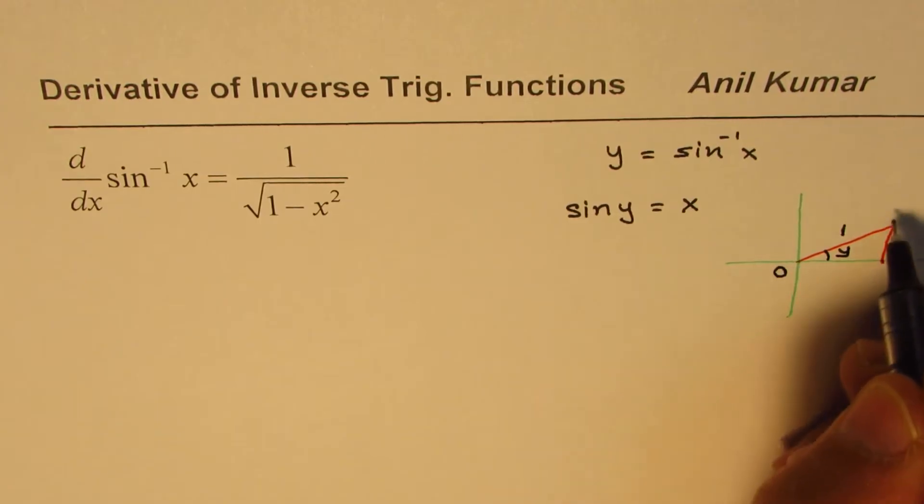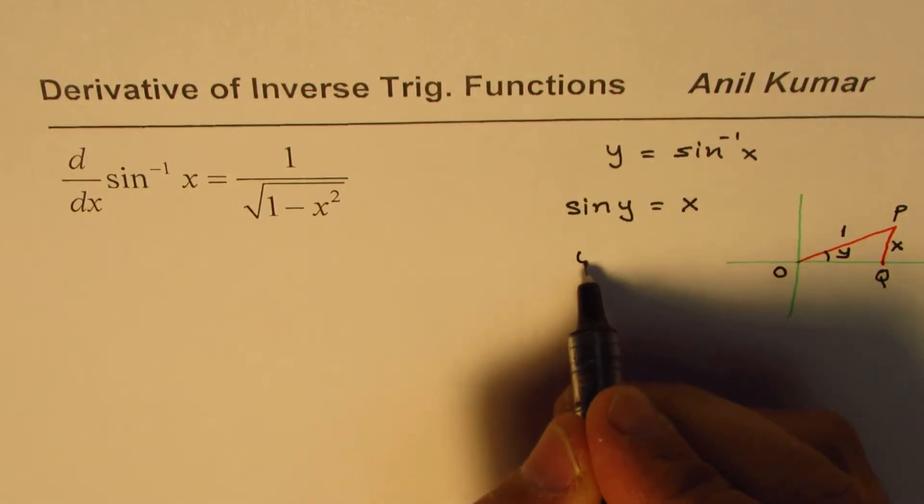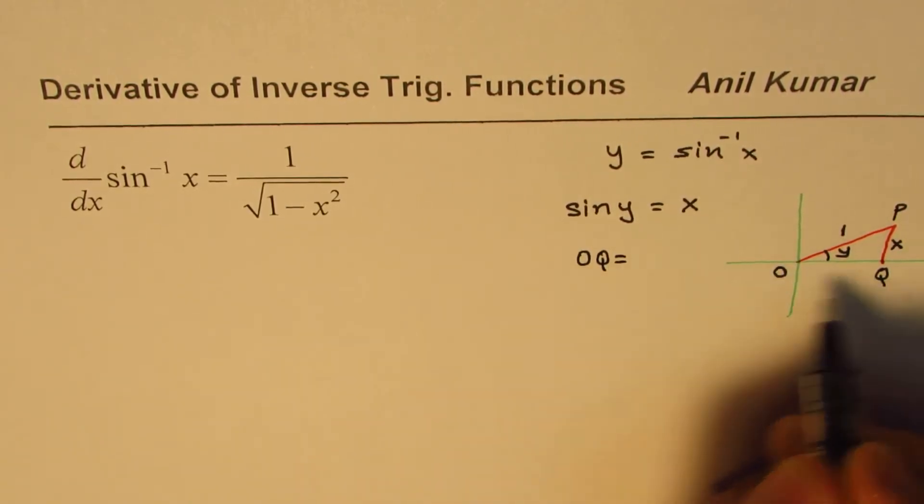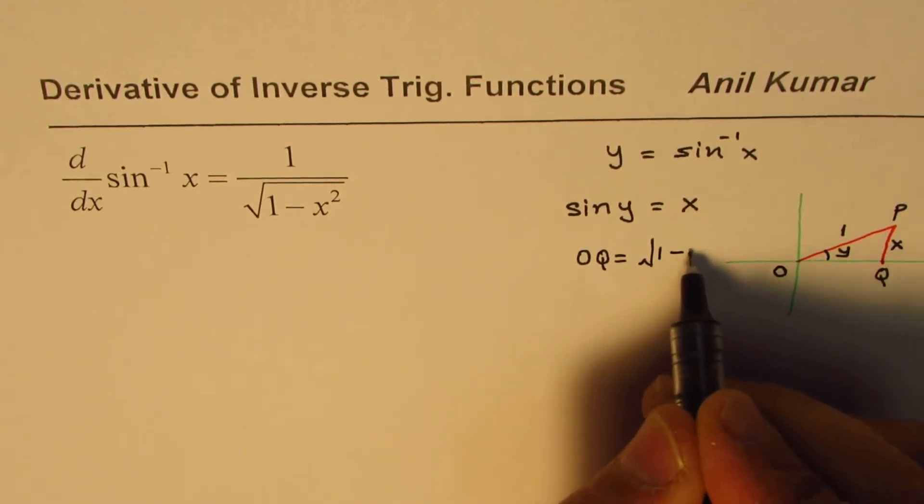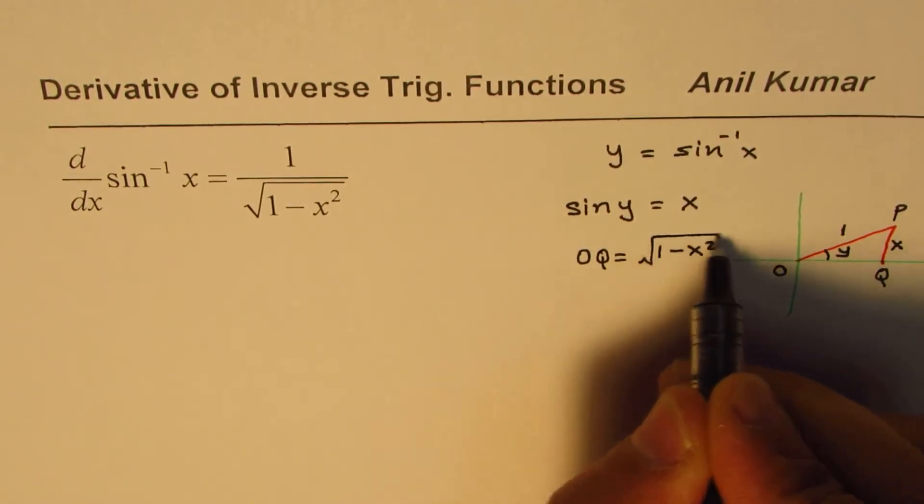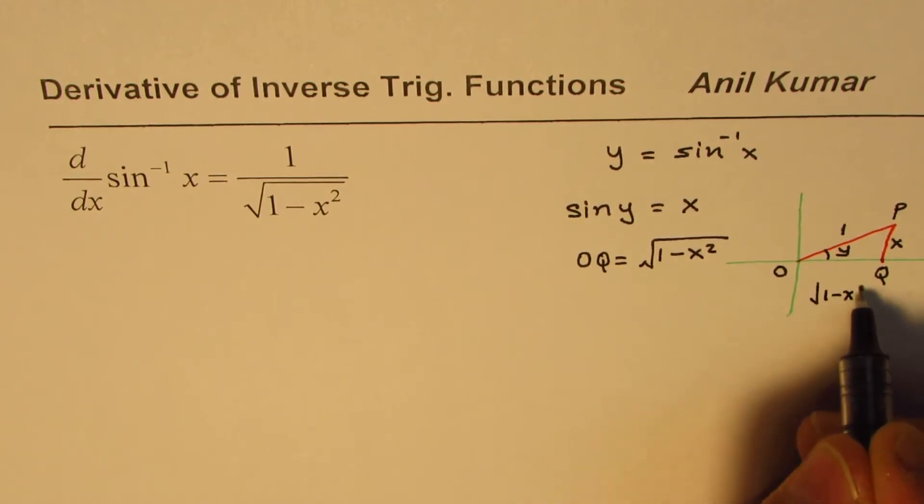Now, in this triangle, let me say OPQ, we can find OQ as equal to square root of 1 square minus x square. So that is OQ. So this is square root of 1 minus x square.